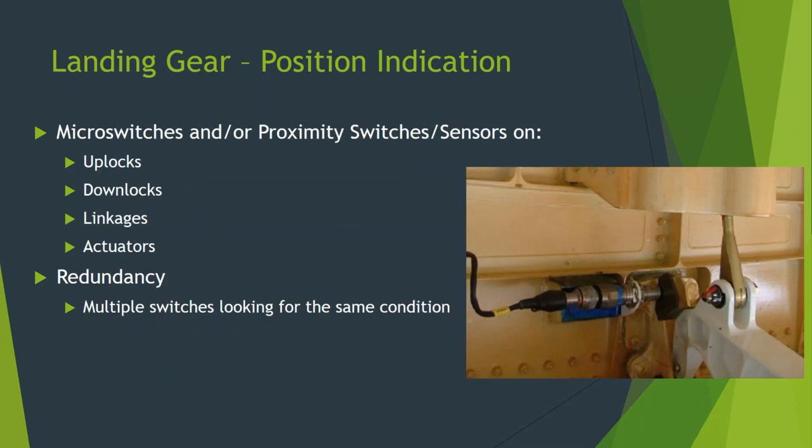Typically there are multiples of these sensors. For weight-on-wheels, for instance, you would often have one on all three gear — left, right, and nose. Two of them would have to confirm the aircraft is on the ground, or two of them would have to show the aircraft was in the air before you could retract the landing gear.